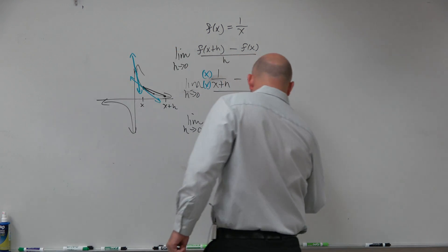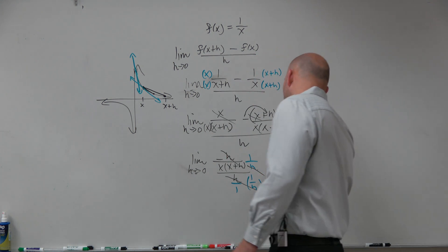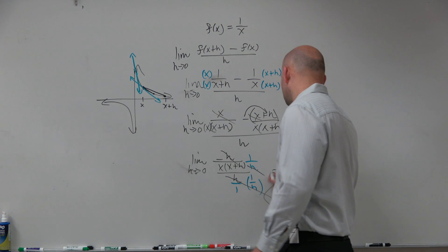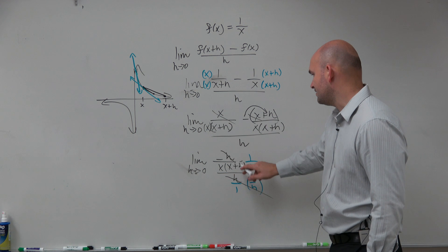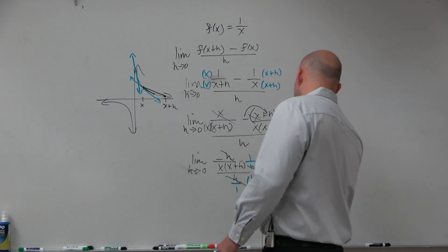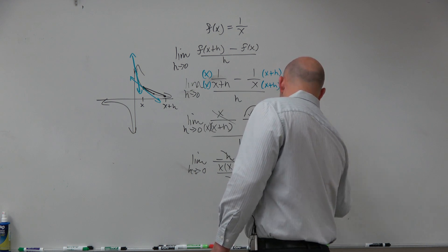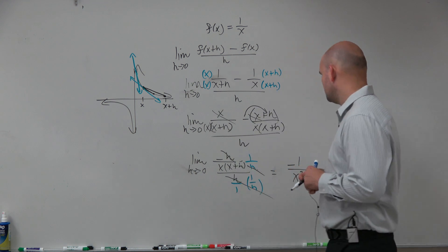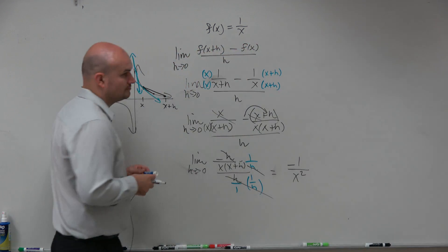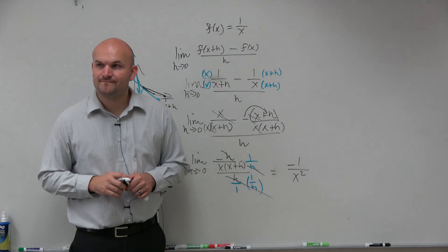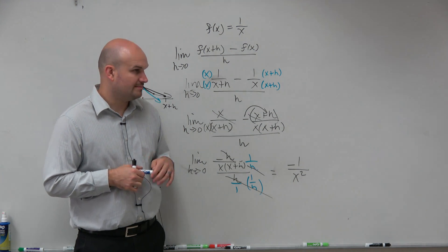And we obtain, now that multiplies to 1, the h's divide to 1, and we're left with, and then we can plug in 0 in for h. Plug that in for 0, you guys can see we have a negative 1 over x squared. And there you go. That's the equation of the line at any point.